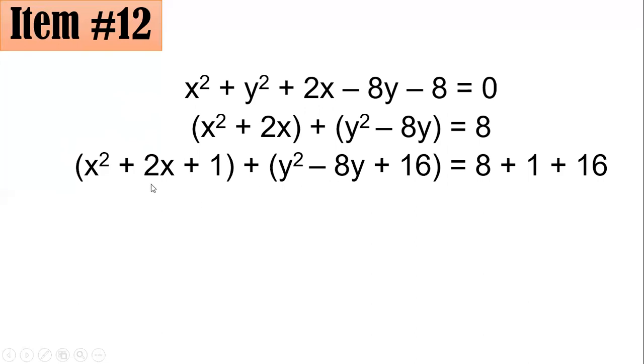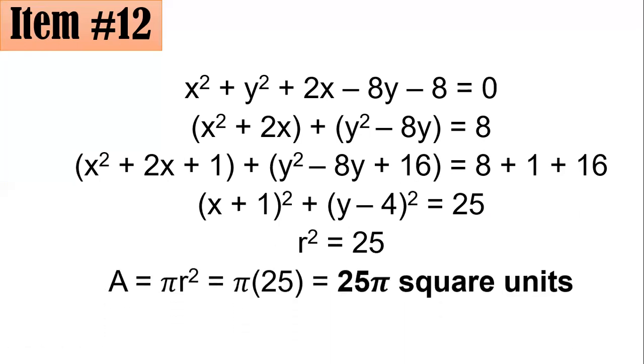And expressing these now as squares of binomials. So x² + 2x + 1 could be expressed as (x + 1)², plus the second one as (y - 4)², equals 8 + 1 + 16, which is 25. And remember, if you are having an equation of a circle in standard form, then this constant here is in fact your r². And we know that the area of a circle is πr². So that's why I multiplied π with 25 to arrive to 25π square units, letter B.